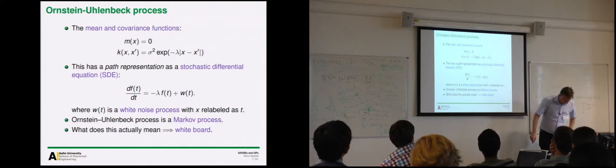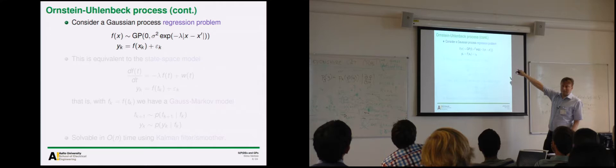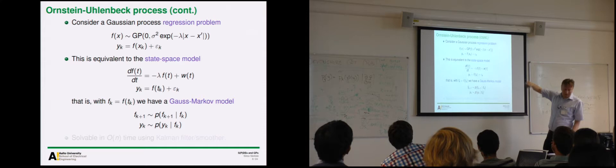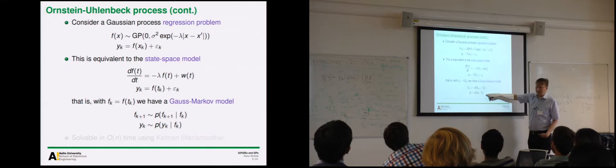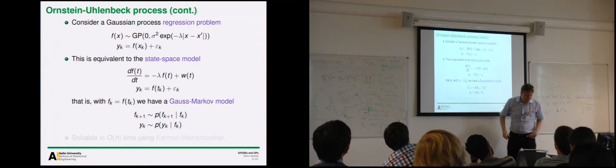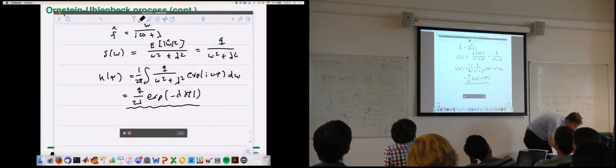Before that, if you have a Gaussian process regression problem where we also measure something, the SDE representation is equivalent to a state-space model. It turns out this is equivalent to a Kalman filtering problem — a probabilistic state-space model of this form. Maybe we can actually take a look at that as well.